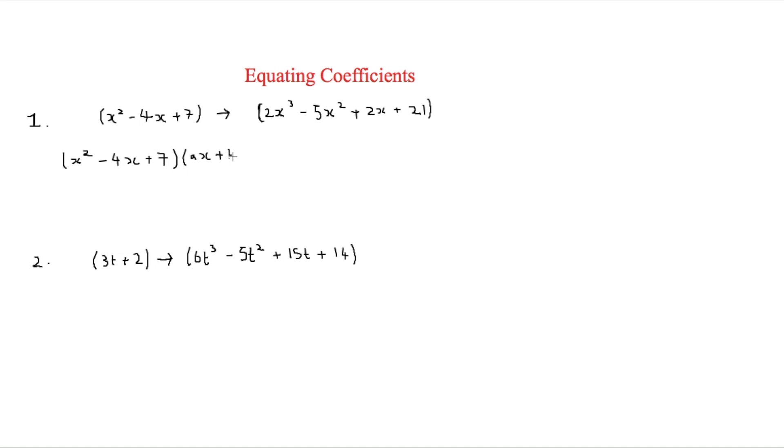Now from here it's fairly simple as we can work out a by comparing the x squared to the 2x squared. And as it's 2x squared and this is x squared, what we need to times it by is 2. So a is equal to 2.